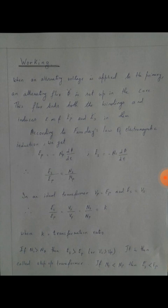Therefore, ES by EP equals VS by VP equals NS by NP equals K, where K is the transformer transformation ratio.